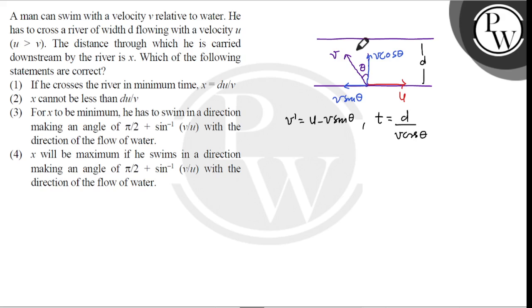So the downstream value of X, X equals to V dash into T. That is equal to U minus V sin theta into D upon V cos theta.